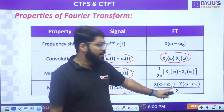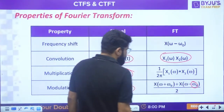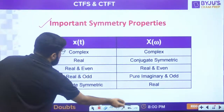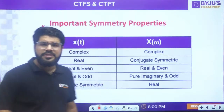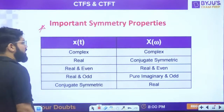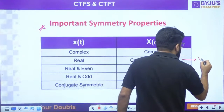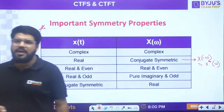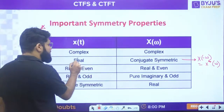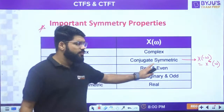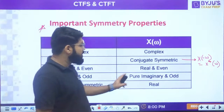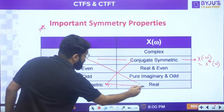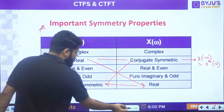Important symmetry properties - expect factual questions here. If a signal is complex, the Fourier transform will be complex. If a signal is real, the Fourier transform is conjugate symmetric: X(-ω) = X*(ω). If a signal is real and even, the Fourier transform is also real and even. If real and odd, the Fourier transform is pure imaginary and odd. If the signal is conjugate symmetric, the Fourier transform will be real.